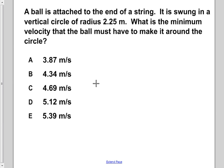A ball is attached to the end of a string. It is swung in a vertical circle of radius 2.25 meters. What is the minimum velocity that the ball must have to make it around the circle?